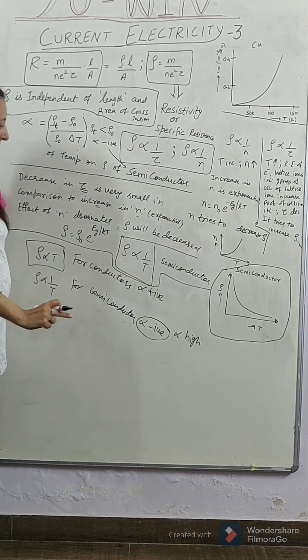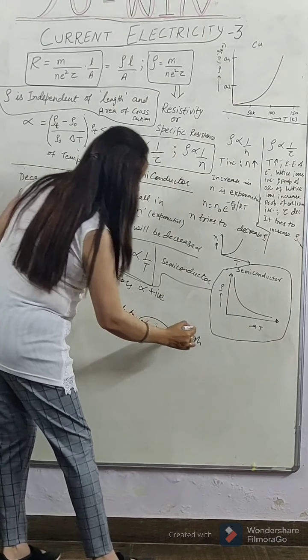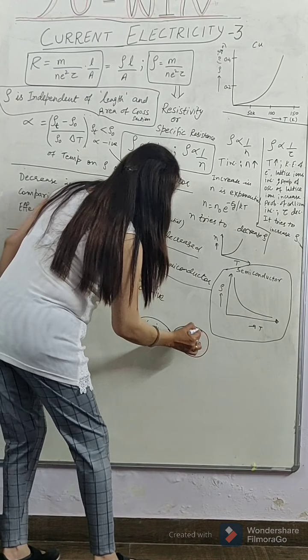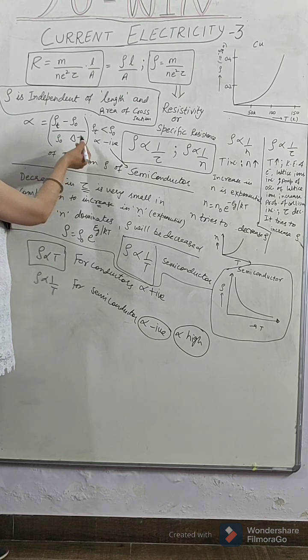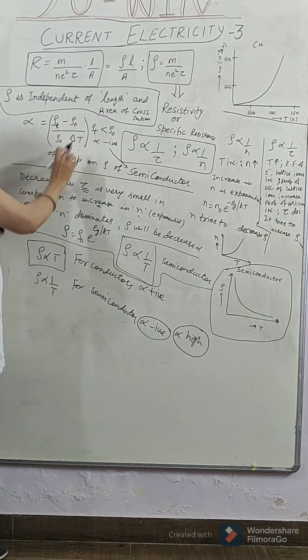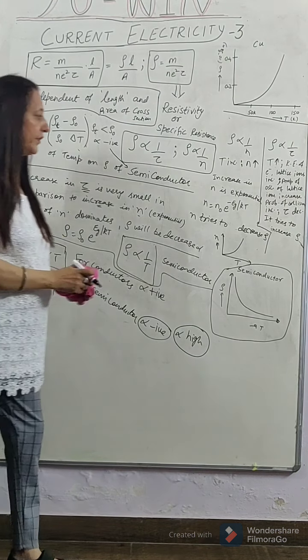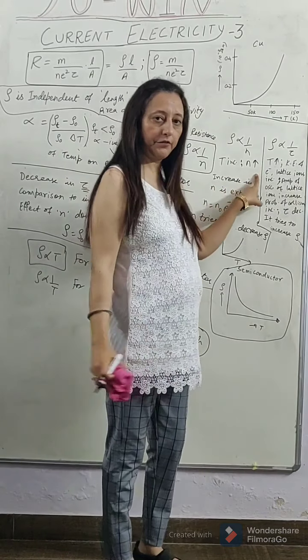And one very important thing that you need to remember is that alpha is very very high in case of semiconductors. Because, in semiconductors' case, the change is very large. In case of conductors, only relaxation time is affected.